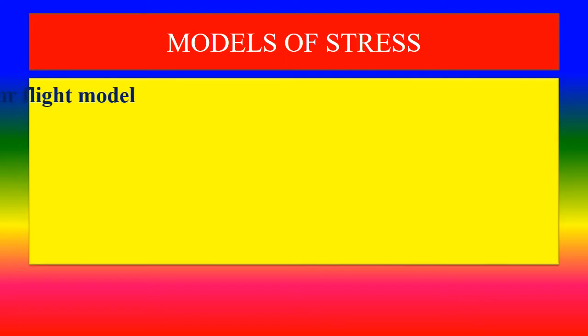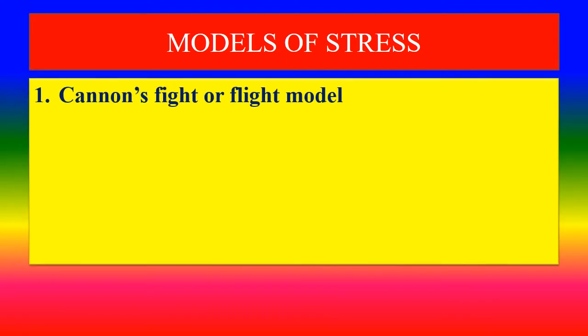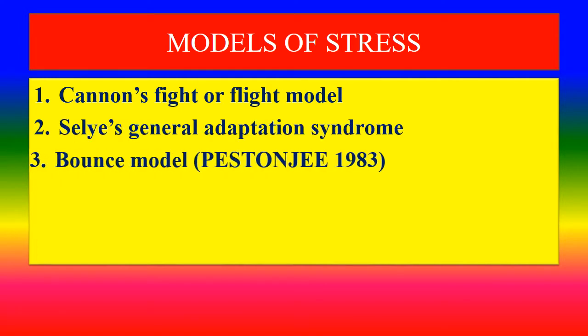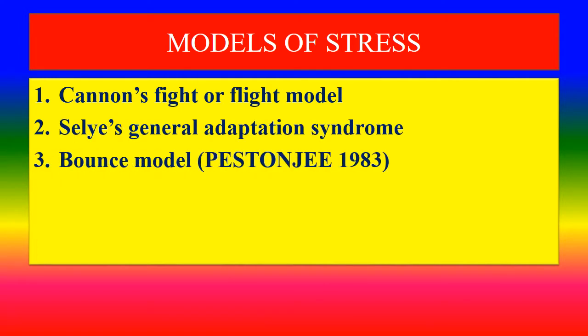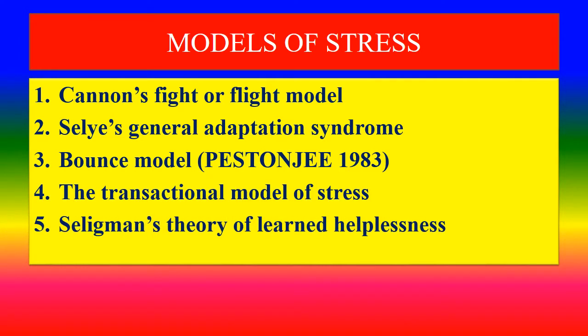List of Models. First model: Cannon's Fight or Flight Model. Second: Selye's General Adaptation Syndrome. Third: Bounce Model. Fourth: The Transactional Model of Stress. Fifth: Seligman's Theory of Learned Helplessness.